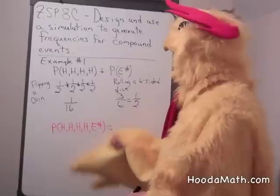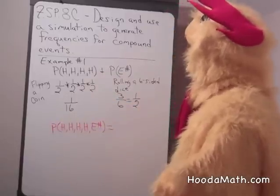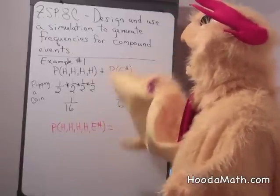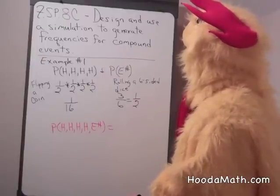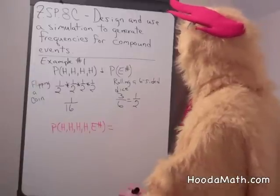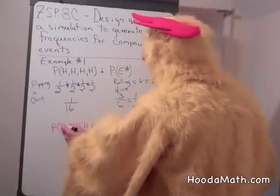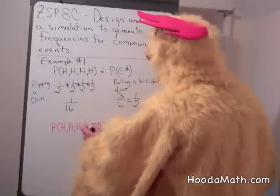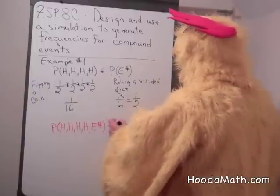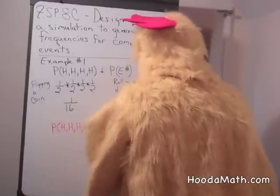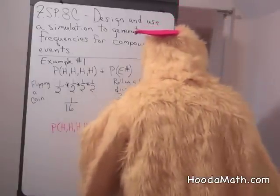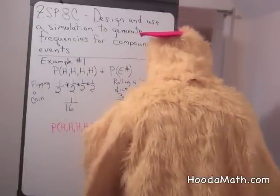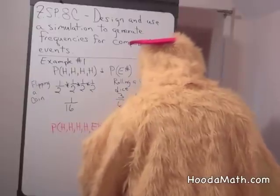So we're going to put these two probabilities together to generate a compound probability. So here's our frequency. We're going to multiply 1/16th, which is the probability of getting four heads in a row, times even, which is getting an even when you flip a dice. So 1/16th times 1/2 equals...